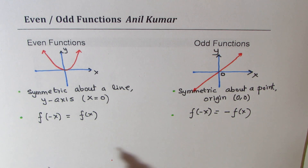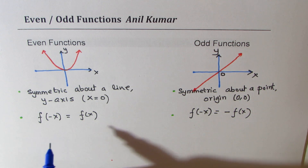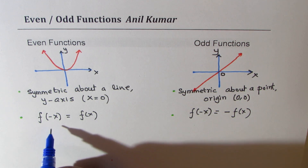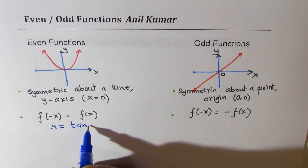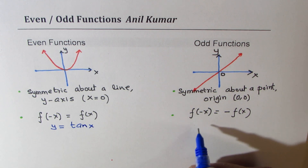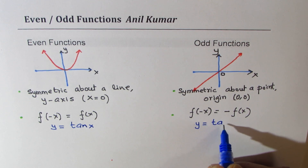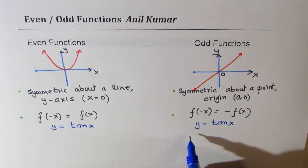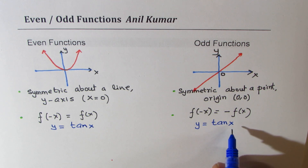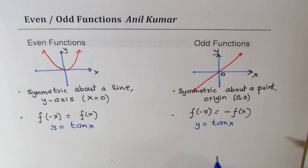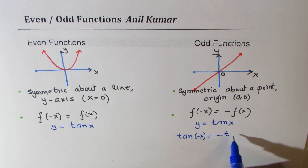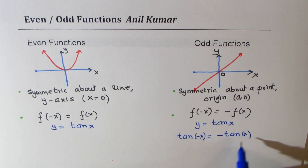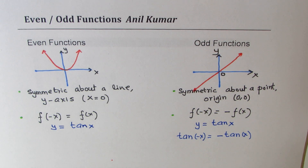Then we will know exactly whether they are even or odd. As far as trigonometric functions are concerned, if I have y equals to tan x, it's an odd function. If I find the value of this function at minus x, then tan of minus x equals minus tan x — you know that. So it's an odd function. The graph of this function, if that is ±π/2, is kind of like this.